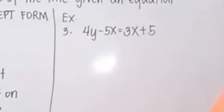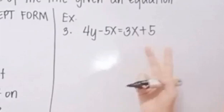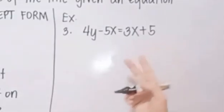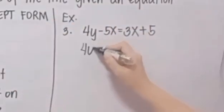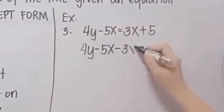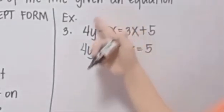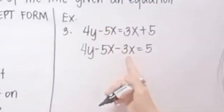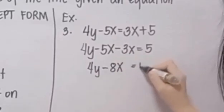What if an equation is not written in standard form? Let's try this one: 4Y minus 5X is equal to 3X plus 5. As you can see, there are two X terms. We need to combine them, so we transpose 3X to the left side. That becomes 4Y minus 5X minus 3X is equal to 5.